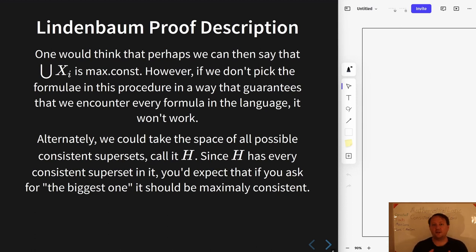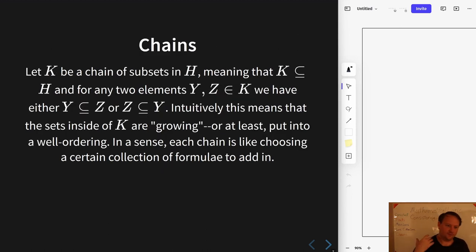So what you could realize is if any one procedure of adding formulae into our set is not guaranteed to work out, then maybe somehow we want to think about the space of all possible consistent supersets. And at least on some level, you kind of think that then the one that we want has to be somewhere in here. And maybe we can find some way of picking one of the things in this massive universe of sets, which is the one, or at least one of the ones that we want.